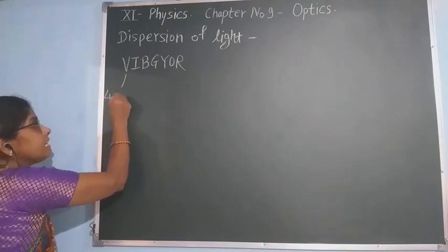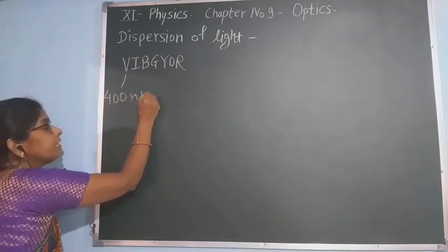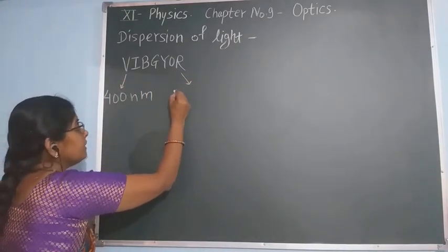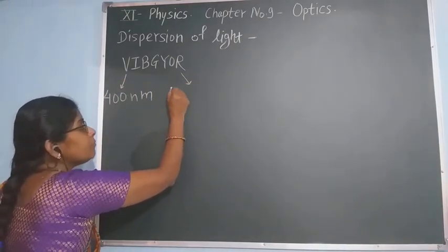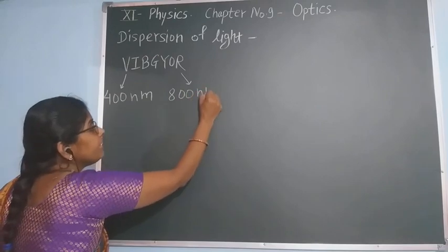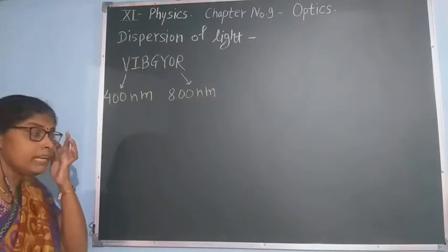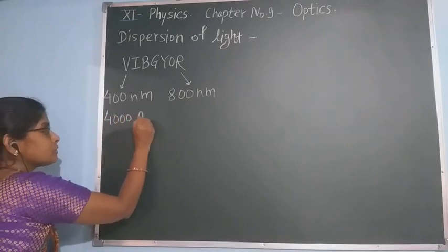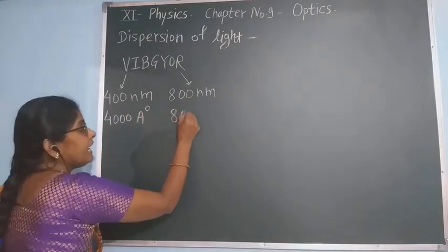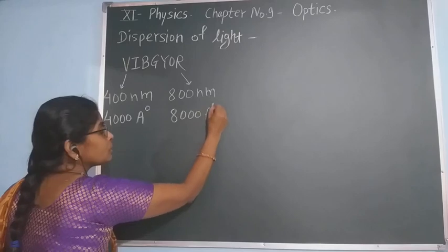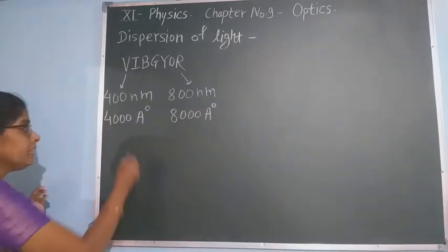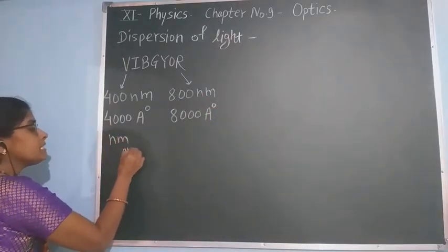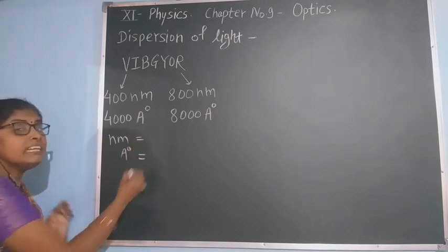The violet color has a wavelength of near about 400 nanometers, or 4,000 angstroms, while red light has a wavelength of near about 800 nanometers, or 8,000 angstroms.